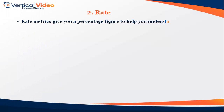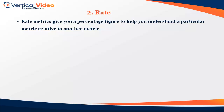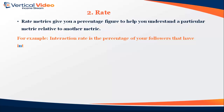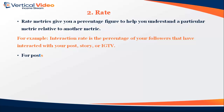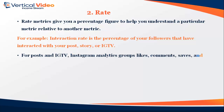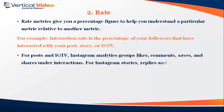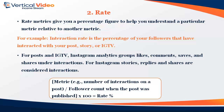Two: Rate. Rate metrics give you a percentage figure to help you understand a particular metric relative to another. For example, interaction rate is the percentage of your followers that have interacted with your post, story, or IGTV. For posts and IGTV, Instagram Analytics groups likes, comments, saves, and shares under interactions. For Instagram Stories, replies and shares are considered interactions.